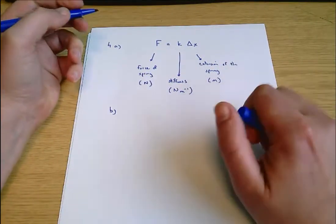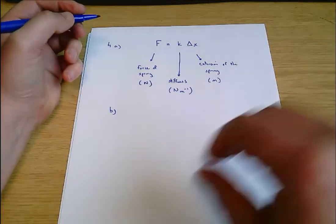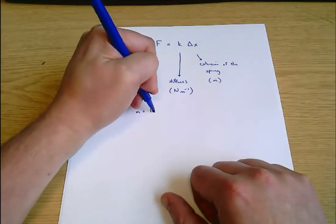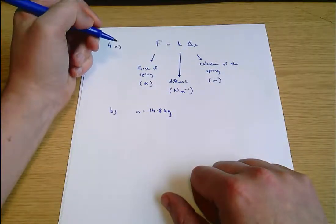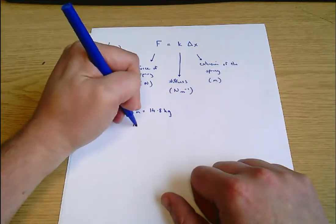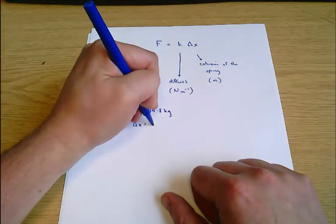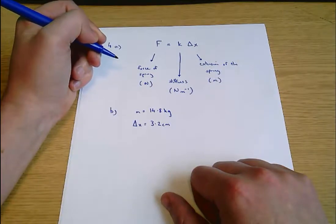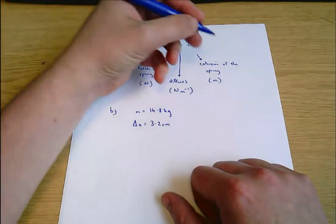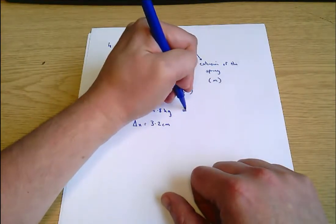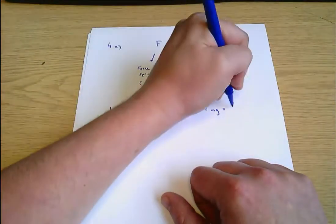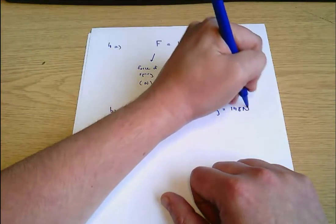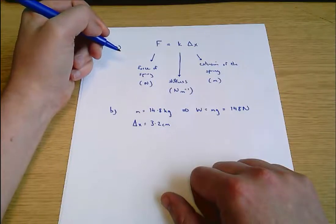Part B says a mass of 14.8 kilograms is hung from a spring, m equals 14.8 kilograms causing the spring to extend by 3.2 centimeters. Delta x the extension equals 3.2 centimeters. Give the spring stiffness to three significant figures and use gravity equals 10 meters per second per second. So we can say weight equals mass times gravity is 148 newtons. And that's the force in this problem.